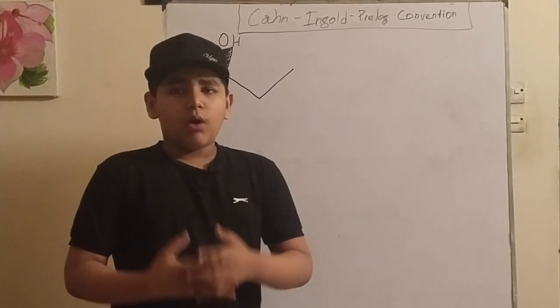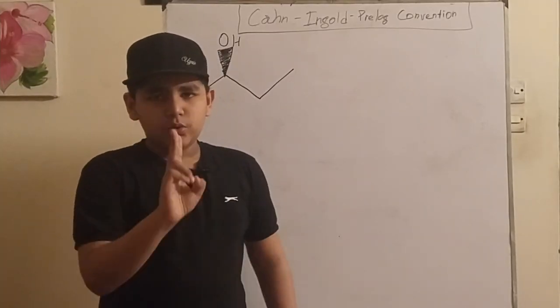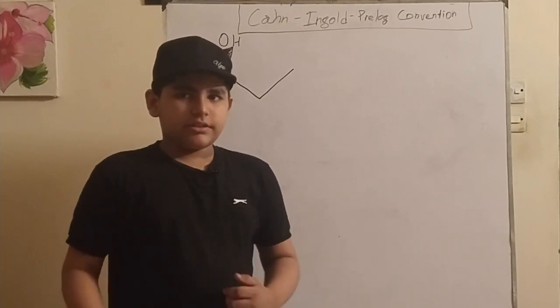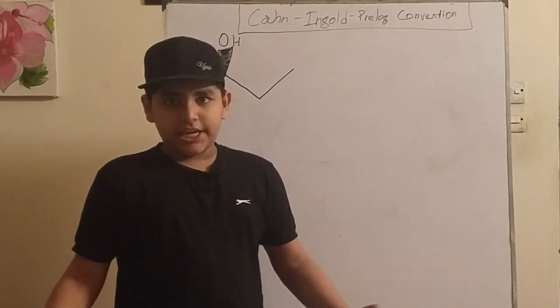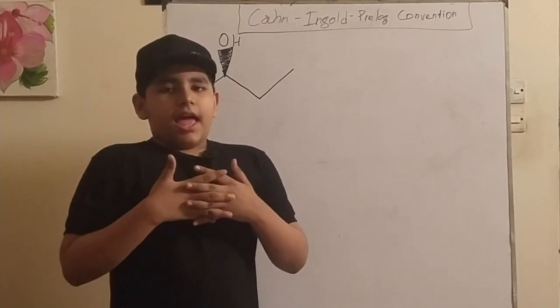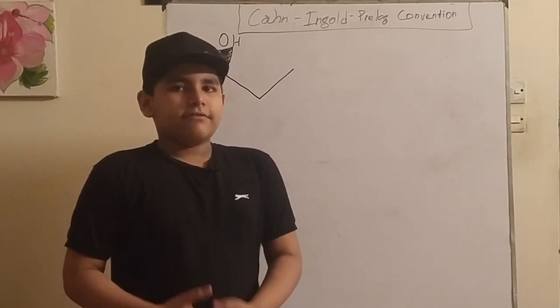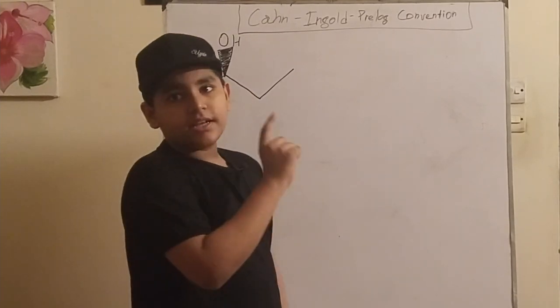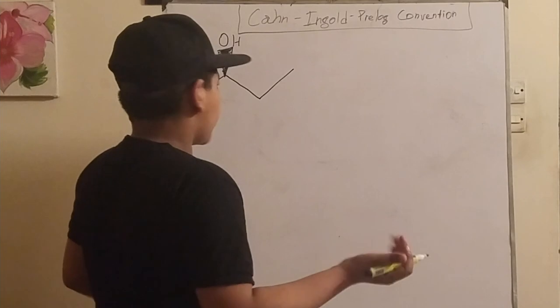Assalamu alaikum everyone, and today we are going to be talking about the Cahn-Ingold-Prelog convention for a molecule with one chiral center. There are two enantiomeric possibilities, and we're going to want to differentiate between them. In order to do that, we have to use the Cahn-Ingold-Prelog convention.